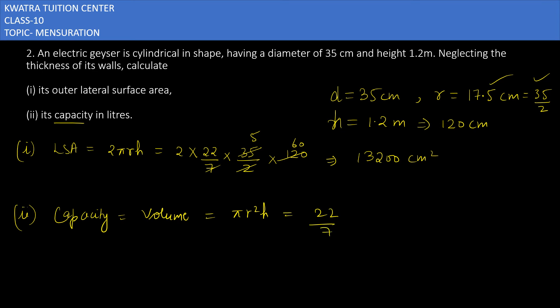π can be written as 22 by 7. R can be written as 35 by 2, then similarly you can write again, and then h is 120. Now you can reduce it. 7 and 35 can be cancelled, it will give you 5. 2 and 120 can be cancelled, it will give you 60. And then 2 and 60 can be cancelled, it will give you 30. Now multiplying these all you will get the answer as 115,500 cm cube.